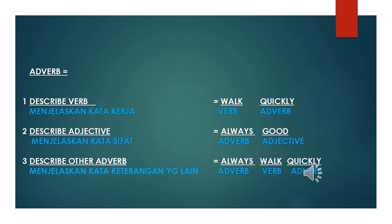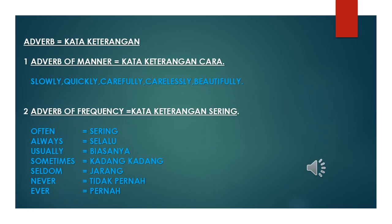So we use the first adverb 'always' to explain or modify the second adverb 'quickly.' I always walk quickly — not just one time, almost every day I walk quickly. Now, adverb is divided into two types: adverb of manner and adverb of frequency.